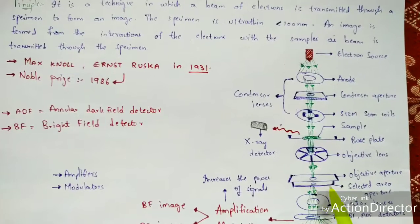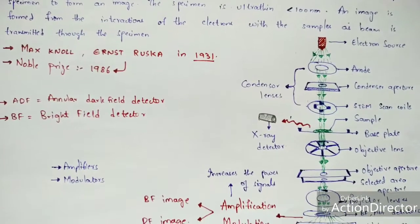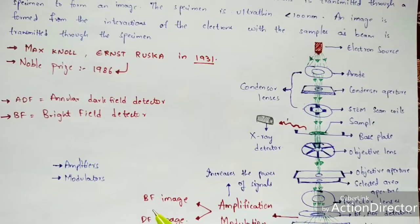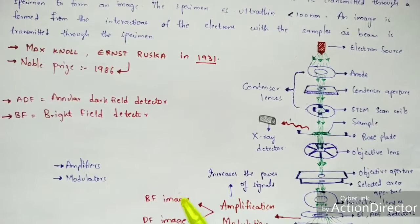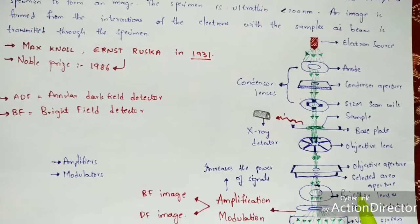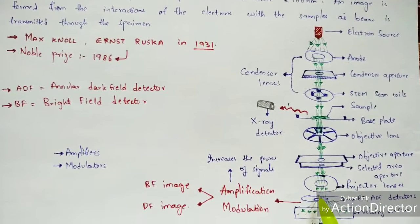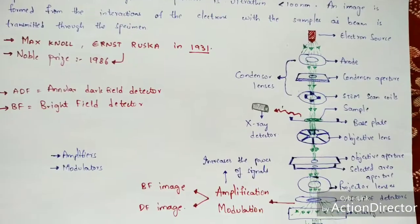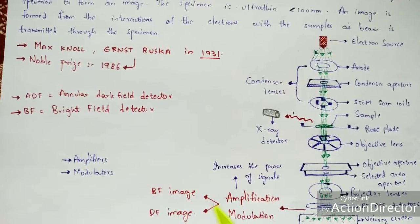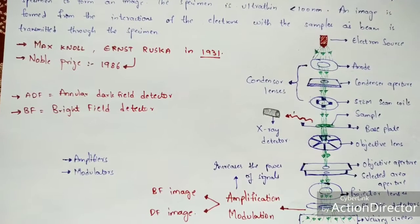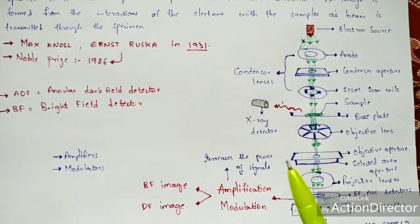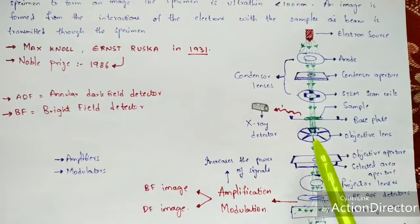A selected area aperture is also present in this type of microscope. It removes the unwanted restricted image and allows only the particular image we want from the sample to pass through. That beam is then passed to the projector lens. The projector lens plays a major role in image formation — it does not display the image directly, but helps in the display of the type of image formed from the sample.